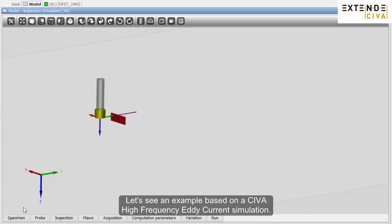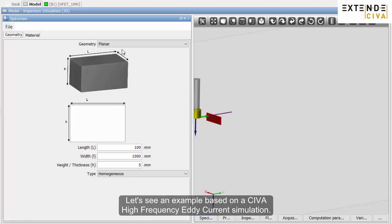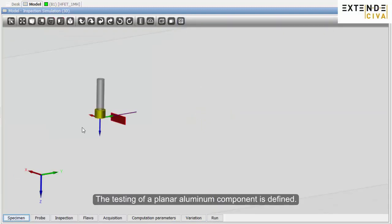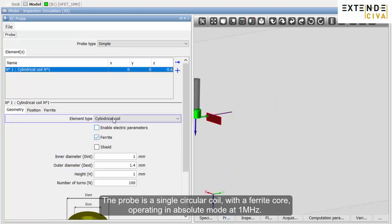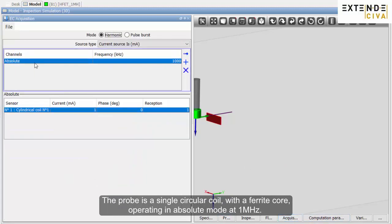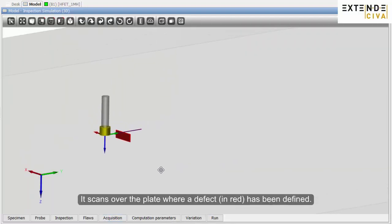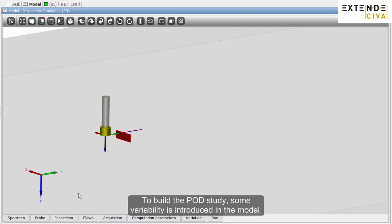Let's see an example based on a CIVA high-frequency eddy current simulation. The testing of a planar aluminum component is defined. The probe is a single circular coil with a ferrite core, operating in absolute mode at 1 MHz. It scans over the plate where a defect, in red, has been defined.